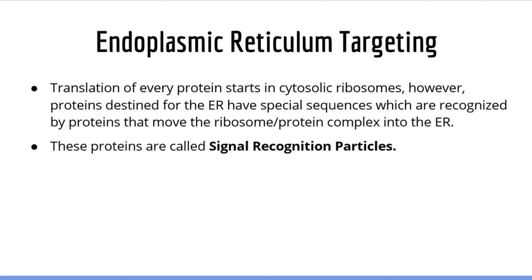So how is it that some proteins are made in endoplasmic reticulum ribosomes while others are made in cytosolic ribosomes? Well, translation of every protein starts in cytosolic ribosomes. However, proteins destined for the endoplasmic reticulum have special amino acid sequences which are recognized by proteins that move the ribosome as it translates the new protein into the endoplasmic reticulum.